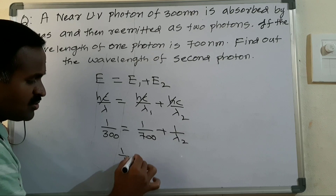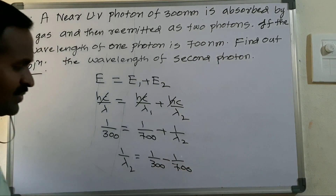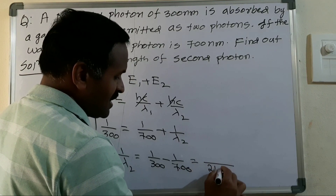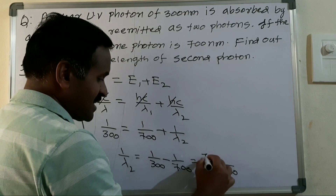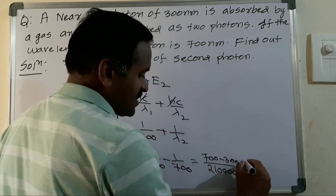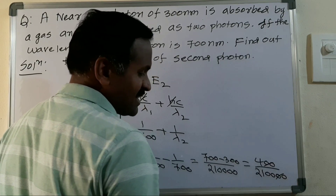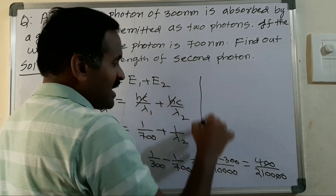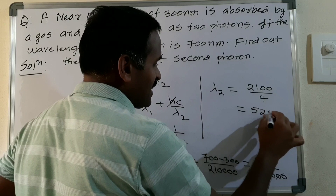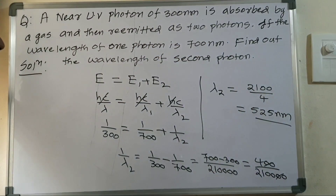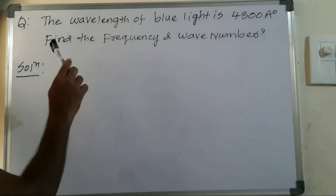So one divided by lambda 2 equals one divided by 300 minus one divided by 700. Taking the LCM gives 700 minus 300 all over 210000, which simplifies to 400 divided by 210000. Therefore lambda 2 equals 210000 divided by 400, which equals 2100 divided by 4, giving lambda 2 equals 525 nanometers.